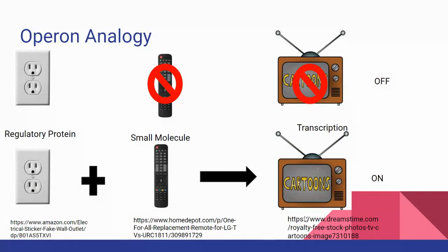To create an analogy, I thought about things I like to do in my free time — this would be watching cartoons. In order to do this, you have to have electricity running to the TV and a TV remote. In this example, the electricity would be the regulatory protein, the TV remote would be the small molecule, and watching cartoons would be transcription. If you do not have a TV remote, you cannot turn the TV on, so there will be no transcription because you can't watch the cartoons.